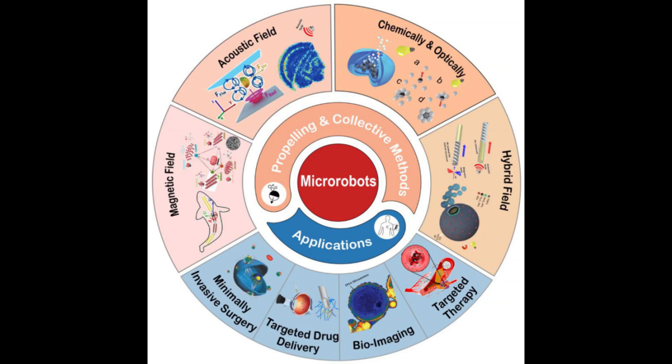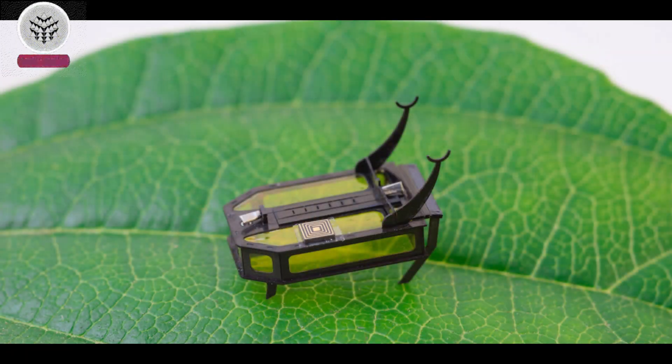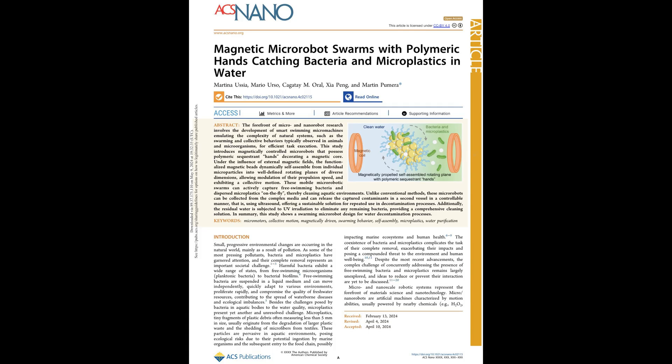When exposed to a rotating magnetic field, the robots gather together in a swarm. By manipulating the quantity of robots that autonomously organize into flat clusters, the researchers discovered they could modify the movement and velocity of the swarm.